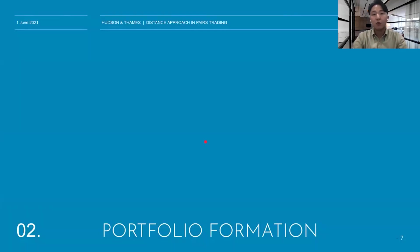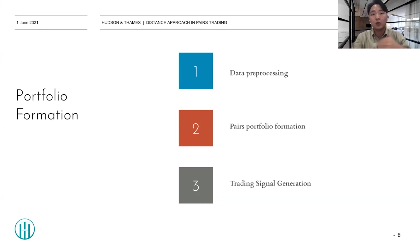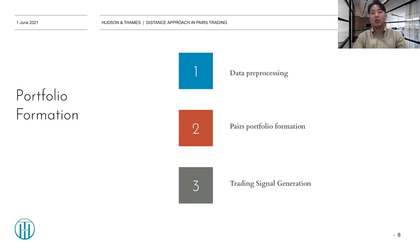Now let's look at the portfolio formation part where we build portfolios based on the method. There are three steps in portfolio formation: data pre-processing, pairs portfolio formation, and trading signal generation. In data pre-processing, we pre-process the input data to scale different price series of stocks. Then we form pairs portfolios based on the concept introduced in the previous slide. After the pairs are formed, we generate the trading signals. The flow of pairs trading in this Pearson correlation approach is the same as the basic distance approach introduced in part one, but there are some details where they improved on its limitations.